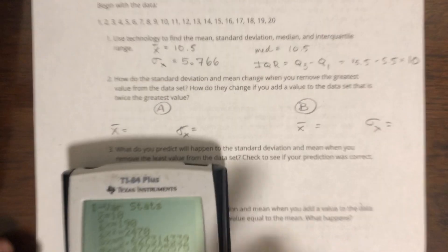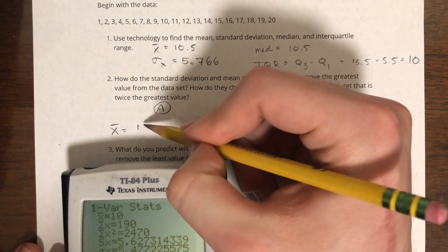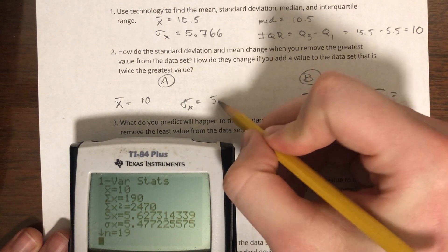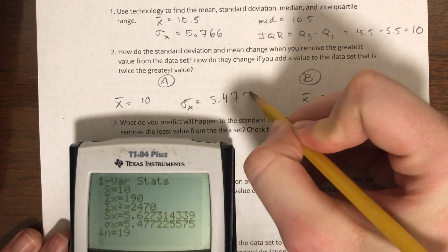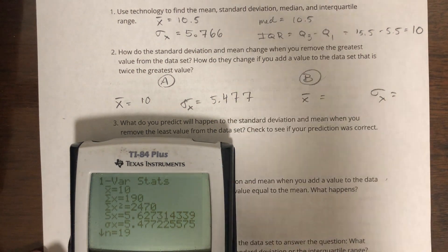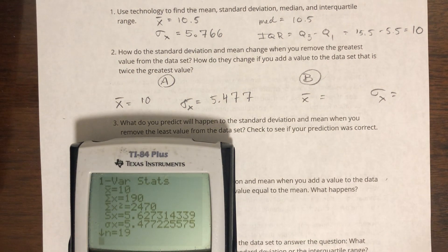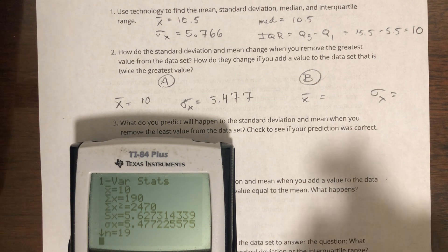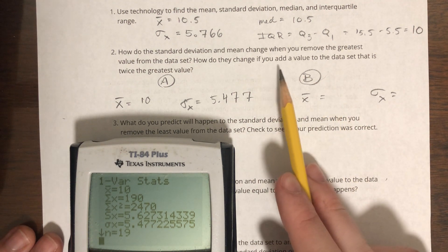So if I go to stat edit, remove 20 from the data set, I run one variable stat. I can see that my x-bar is now 10 and my standard deviation is 5.47. So you can see that both the mean and standard deviation have gone down when you take away that largest value.